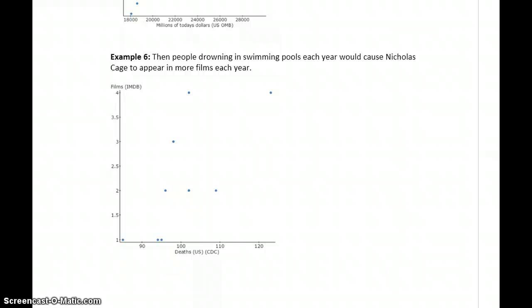If an association proved causation, then the number of people who drown in swimming pools each year would cause Nicolas Cage to appear in more films. This association isn't quite as strong, but it's still closer to positive 1 than it is to 0. But it doesn't really make sense that the number of people who drown in swimming pools has any effect on how many movies Nicolas Cage makes each year.